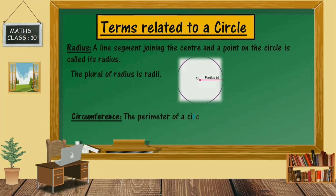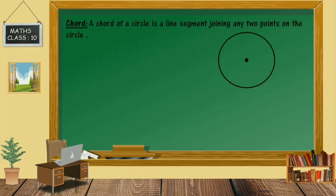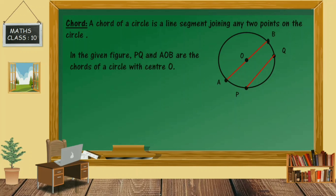Next is circumference: the perimeter of a circle is called its circumference. Next is chord: a chord of a circle is a line segment joining any two points on the circle. In the given figure, PQ and AOB are chords of a circle with center O. The diameter, here represented as AB, has its endpoints on the boundary of the circle, so it is also a chord — in fact, it is the largest chord. The length of a chord increases as it moves toward the center, and is maximum when it passes through the center.